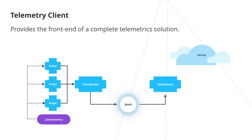And telemposte, a system daemon that takes the spooled records and sends them to the backend server and/or writes to disk. If the telemposte daemon cannot send data to the server, it will spool the records for a period of time defined in the telemetrics.conf file and will then delete or save depending on selected configuration. The telemetry functionality adheres to Intel's privacy policies regarding the collection and use of personally identifiable information.